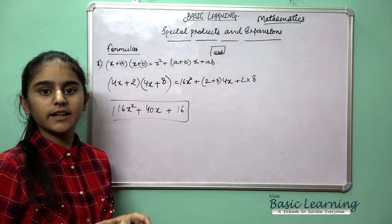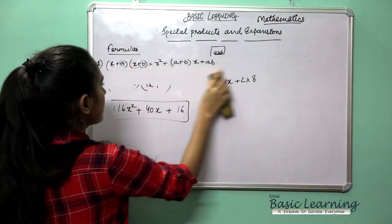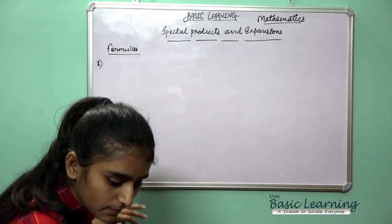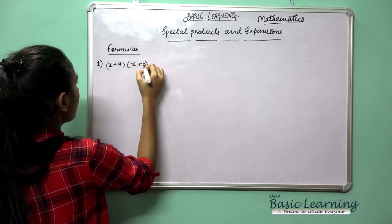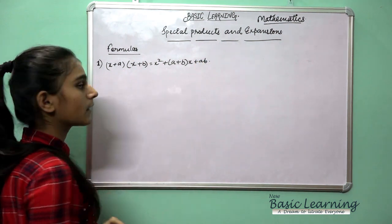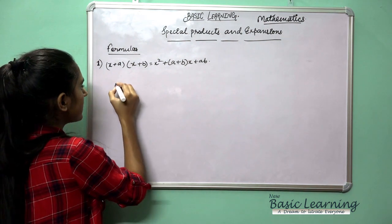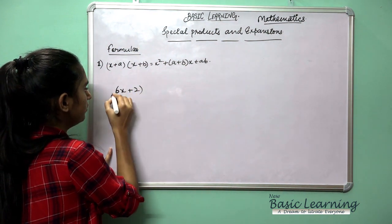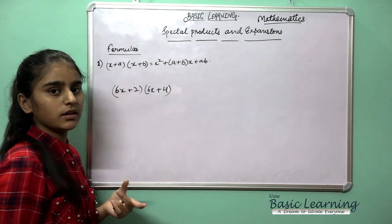I hope this example is clear to you. Now I will take another example for this formula. Suppose the value for (x + a) is given as 6x + 2 and the value for (x + b) is given as 6x + 4.